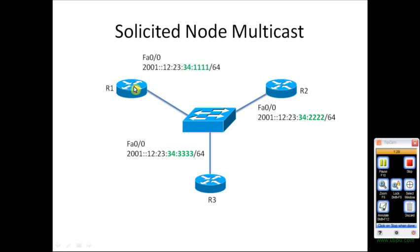R1 has its IPv6 address assigned to its FastEthernet 0/0. R2 has its IPv6 address assigned to its FastEthernet 0/0. And R3 has its IPv6 address assigned to its FastEthernet 0/0 interface.